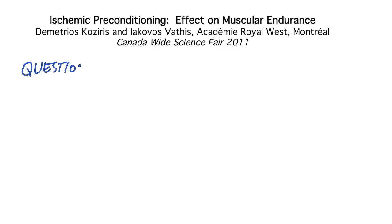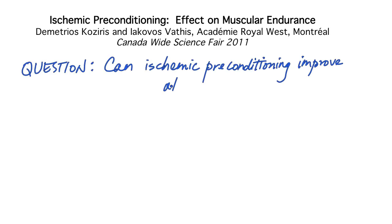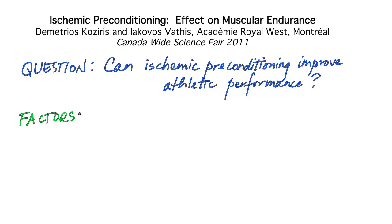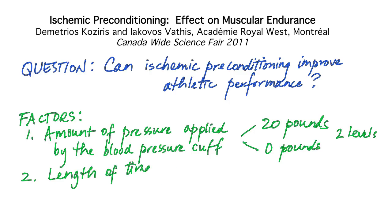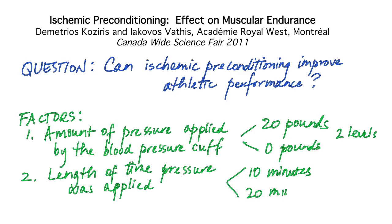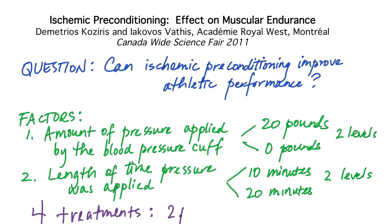The students were interested in whether a similar technique could be used to improve sports endurance. They provided ischemic preconditioning using a blood pressure cuff, applying a pressure of 20 pounds to some subjects and, for comparison, minimal pressure — nominally 0 pounds — to others. They also compared applying the pressure for 10 minutes versus 20 minutes, giving a total of four treatments: the four combinations of the two pressures and the two lengths of time applied. Each treatment was applied to 10 teenage males, providing replication.